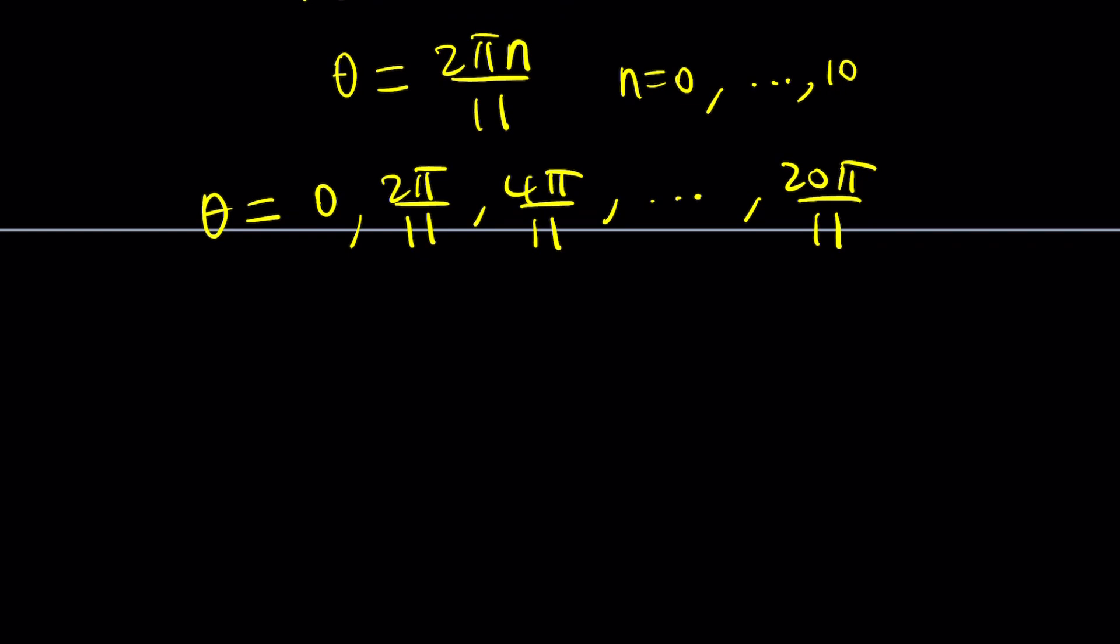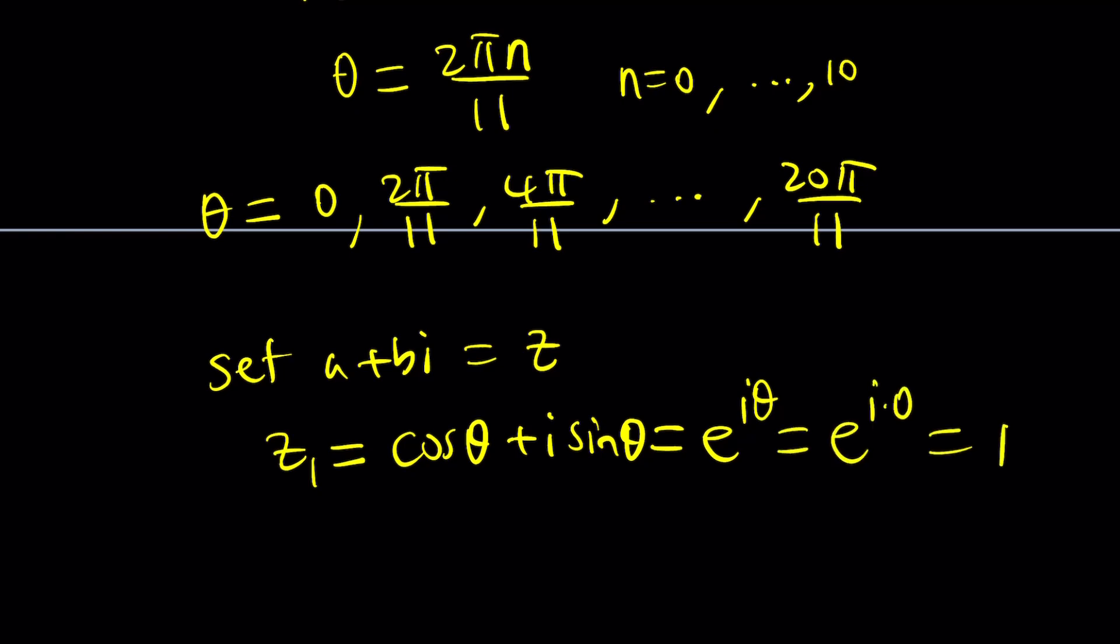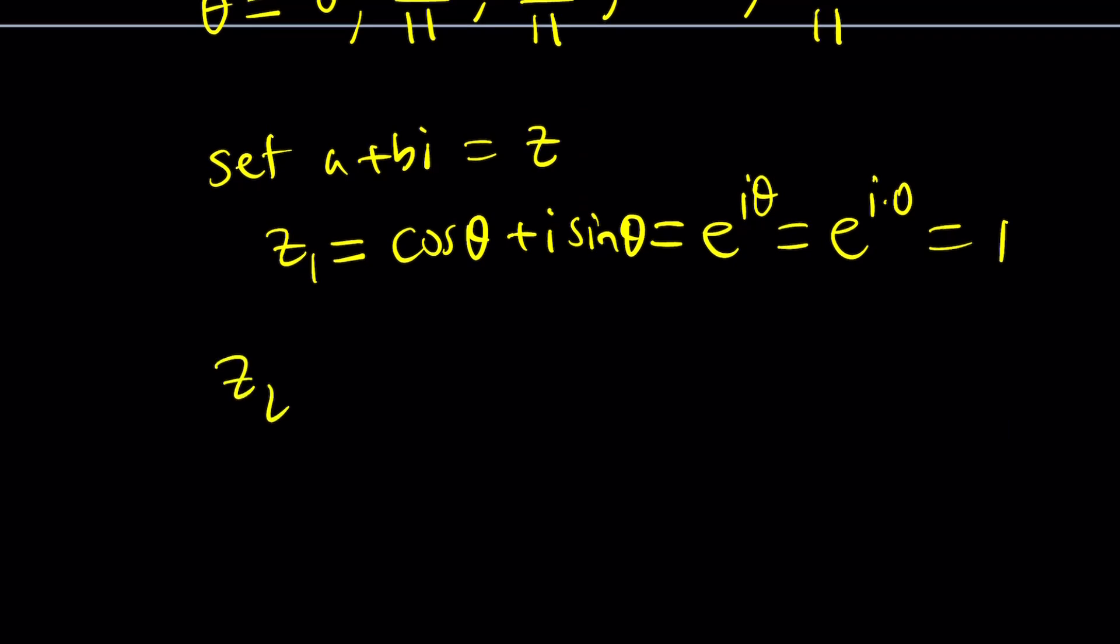Now basically, by setting a plus bi equal to z again, we're going to get the solution like z sub 1 is going to be cosine theta plus i sine theta, and that's going to be e to the i theta. And since theta is equal to 0, for example, e to the i times 0, that's going to be 1. So 1 is the solution. And then z sub 2 is going to be e to the i theta again, but this time theta is going to be 2 pi over 11. And then z sub 10 is going to be e to the power i times 20 pi over 11. Some of the solutions that I showed you, they come from here, but the values like cosine and sine of 2 pi over 11, you can't find them exactly, can you?